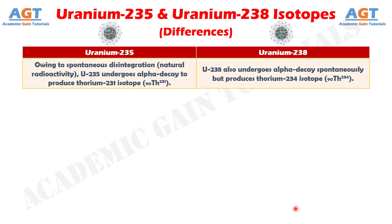Number 6. Owing to spontaneous disintegration, or natural radioactivity, Uranium-235 undergoes alpha decay to produce the Thorium-231 isotope, whereas Uranium-238 also undergoes alpha decay spontaneously but produces the Thorium-234 isotope.